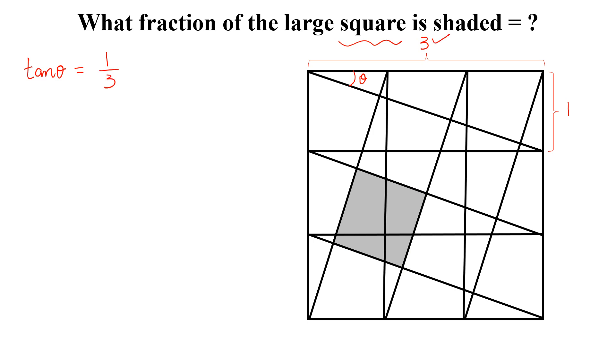If this length is 3 and this length is 1, then we can calculate this length and this will be equal to square root of 10 by Pythagoras theorem. So we can write cos theta is equal to 3 divided by square root of 10.